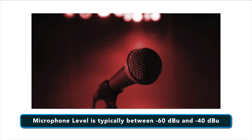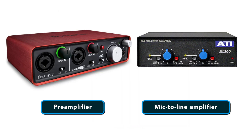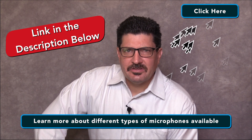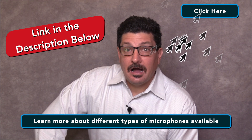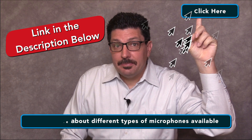Microphone level is usually specified between minus 60 and minus 40 dBu. Several different types of devices are used to boost microphone levels to line level. Mixers are probably the most popular piece of equipment since they can also combine multiple signals together into a single output. Preamplifiers and mic to line amplifiers also do the job and are available as single channel or multi-channel devices. If you want to learn more about the different types of microphones, check out the video I did on microphones — I'll put a link in the description below.